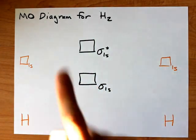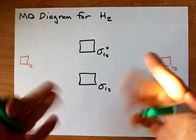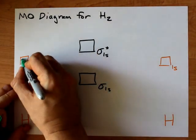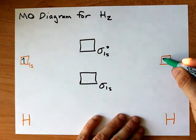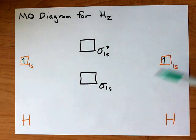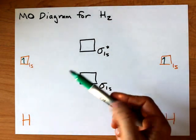Each hydrogen atom only brings one electron with it, which hopefully you know, because hydrogen is the first atom on the periodic table. And each of those electrons is found in a 1s atomic orbital.